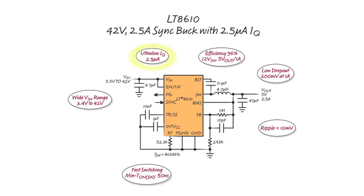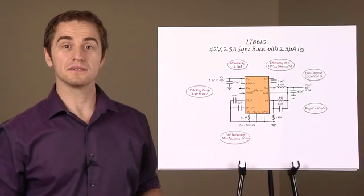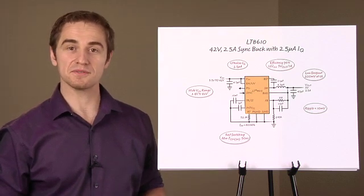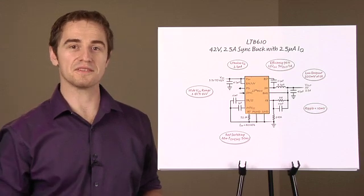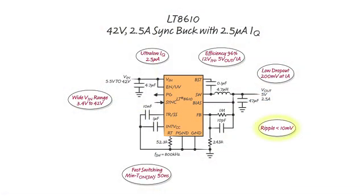The LT8610 offers ultra-low quiescent current of 2.5 microamps. For example, with a 12-volt in and fully regulating 3.3-volt out with no load, the current consumed will only be 2.5 microamps. The output ripple and transient response remain excellent across all loads.